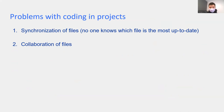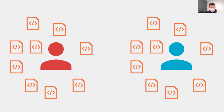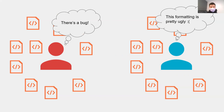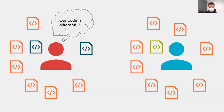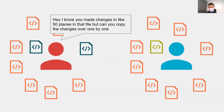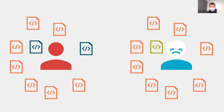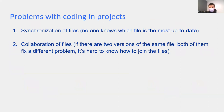Another issue is collaboration. Ben finds some bugs; Alice notices some formatting that can be improved. Ben modifies two files, Alice modifies one file, and then they need to match up their code to submit one set. Ben tells Alice to go through line by line and copy the changes over one by one — unnecessarily tedious work. This problem arises because if people make changes without doing so in real time, you end up with two different versions of the same file, and joining them correctly is non-trivial.